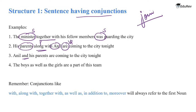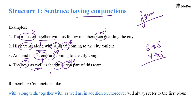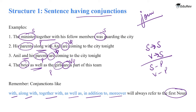'Anil and his parents are coming to the city tonight' — plural subject, plural verb. 'The boys as well as the girls' — talking about boys and girls, so plural, and the verb is also plural. For sentences with conjunctions, if the subject is singular the verb is singular, and if the subject is plural the verb is plural. Conjunctions like 'with,' 'along with,' 'together with,' 'as well as,' 'in addition to,' and 'moreover' will always refer to the first noun.